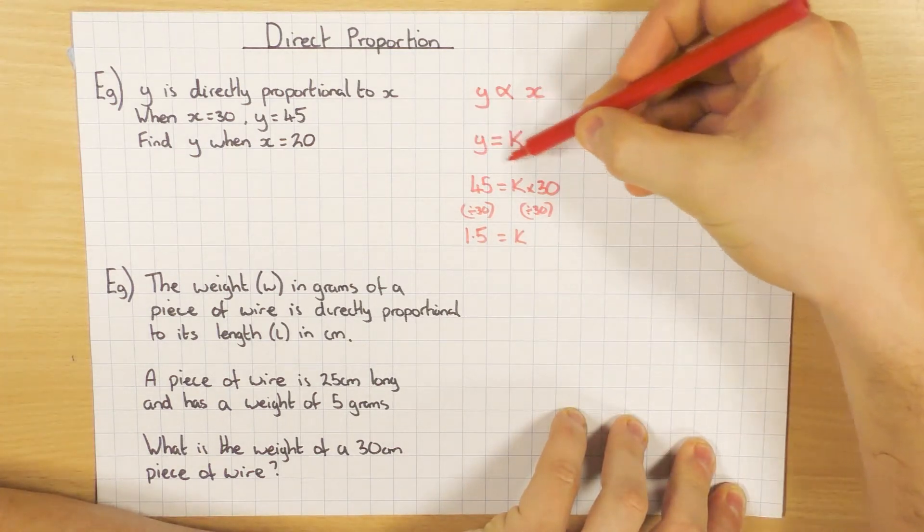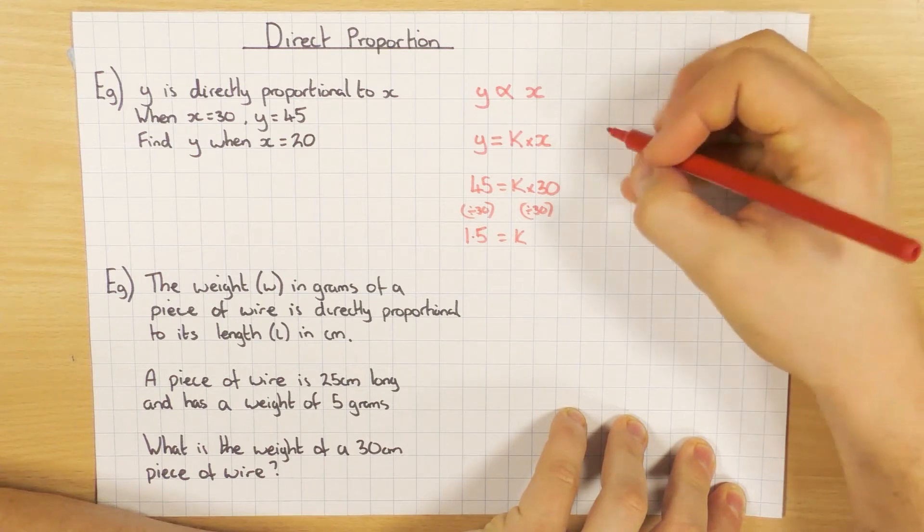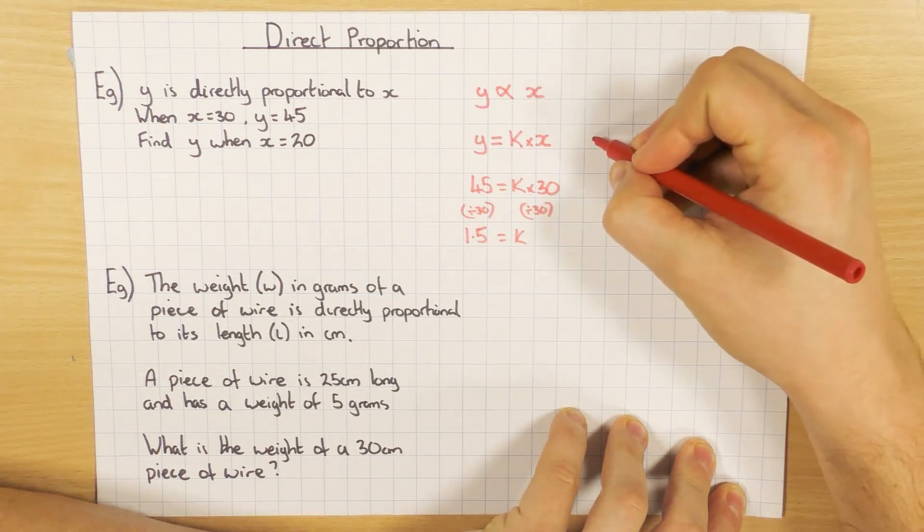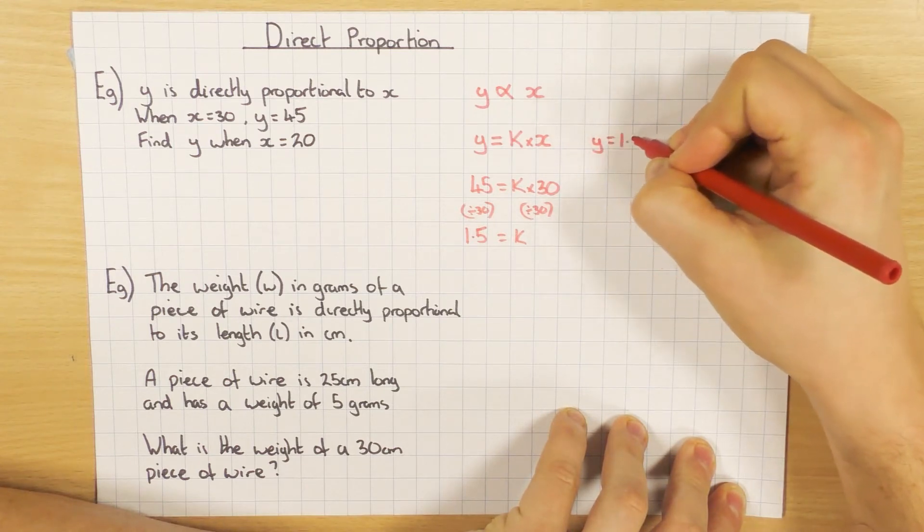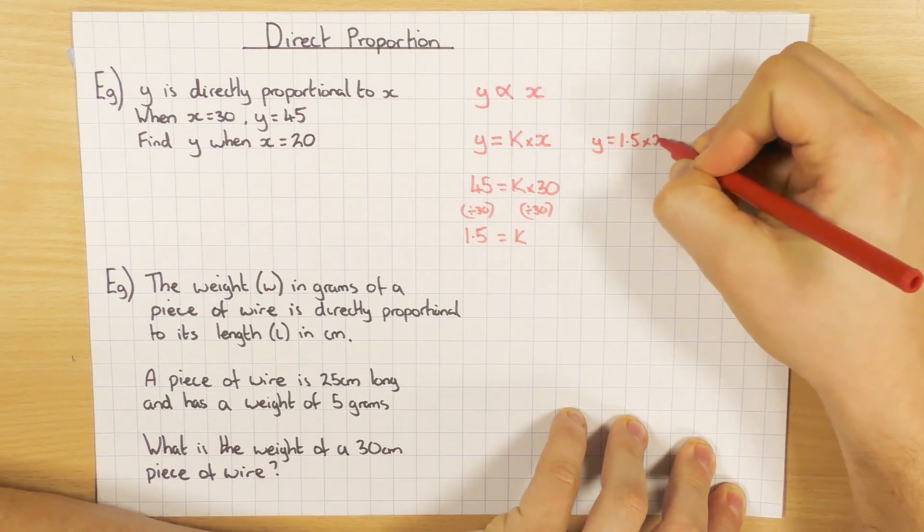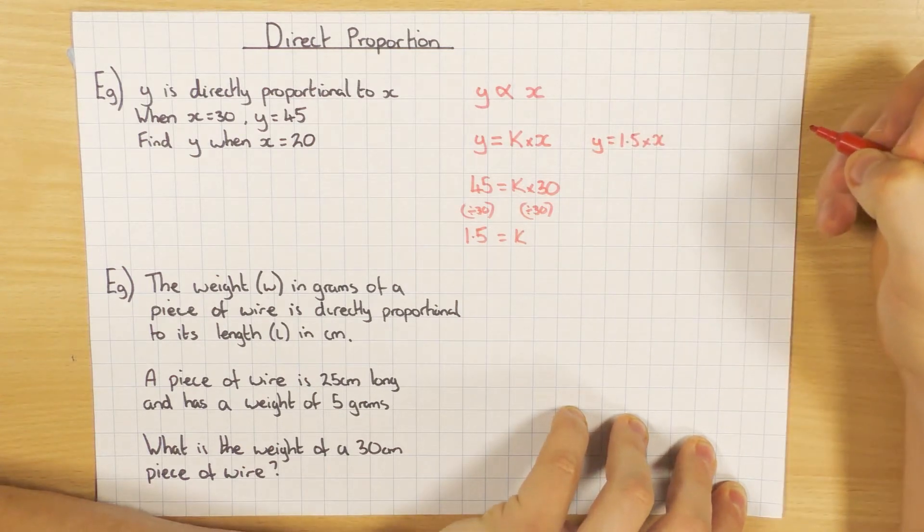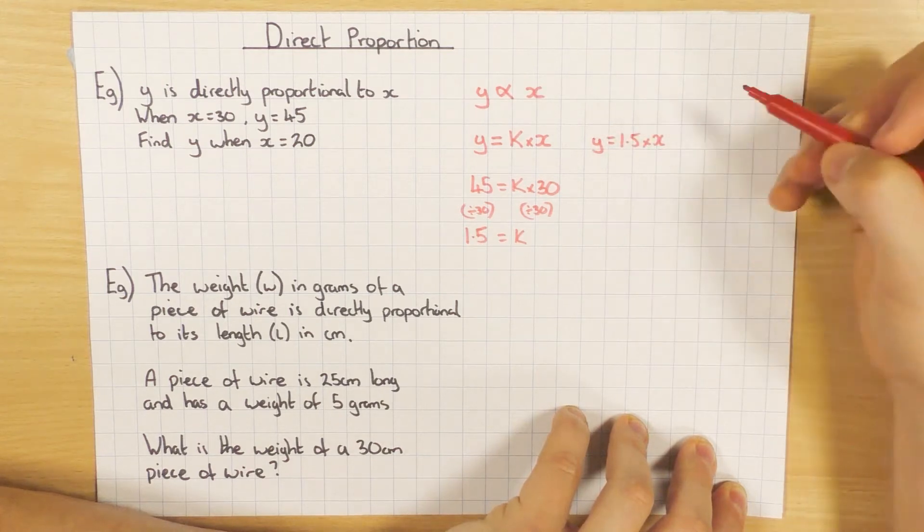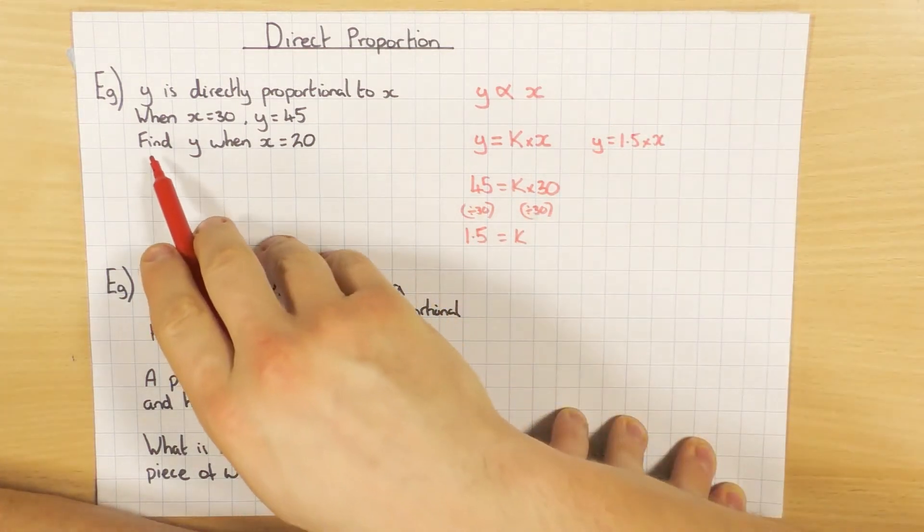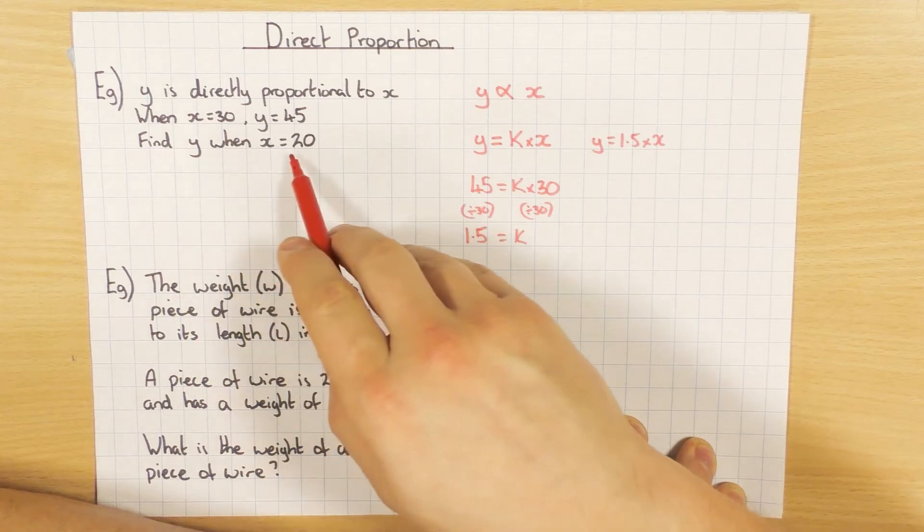Once you know what k is, go back to your formula up here, y equals k times x, and put k in. So the formula here would be y equals 1.5 times x, or 1.5x if you like. Once you've got your formula, you can now actually answer the question which it initially asked you. Find y when x is 20.